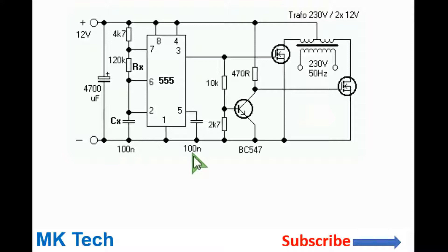This is MKTech and today I'll be showing you how you can make a 12 volt to 230 volt inverter based on the 555 timer and some powerful MOSFETs. You can use the IRF3205 which can give you a power of up to 500 watts easily.